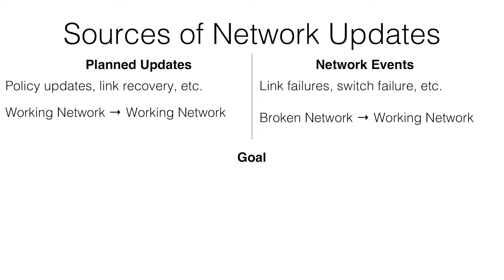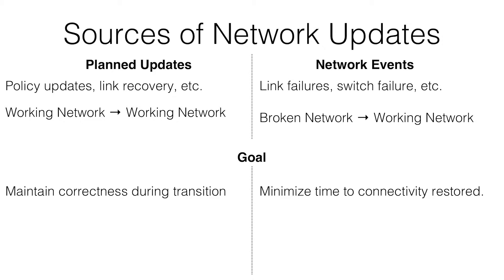As a result of this difference, the goals are quite different. For planned updates, you want to maintain correctness during transitions — exactly the loop-freedom property Stefan was discussing. But for network events, you really just want to minimize time to correctness. Who cares if there is a transient loop while you're restoring correctness? Your packets would have been lost anyway — if they're lost in a transient loop or a black hole, you're not going to find out.